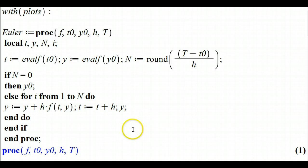Then we define the local variables t, y, N, and i. t and y are for time and your dependent variable y in the procedure. N is going to count how many steps away the time capital T is from the initial time, and i is for the loop.